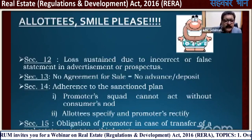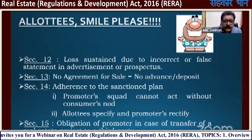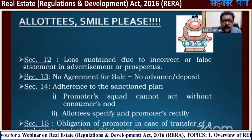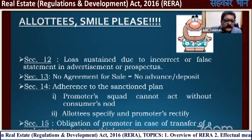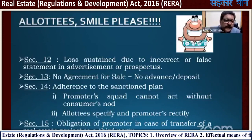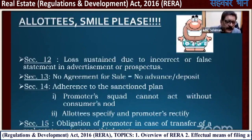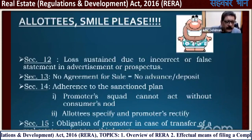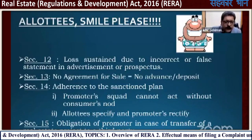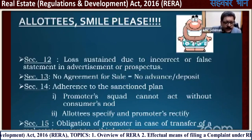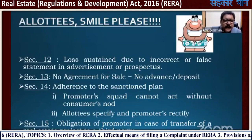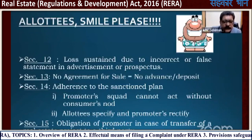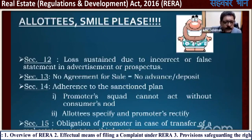Section 13 — no agreement for sale, no advance deposit. You can give advance up to only 10% and you will get the allotment letter. The moment you pay more than 10%, you have to execute an agreement. Otherwise, no advance or deposit is given to the builder.